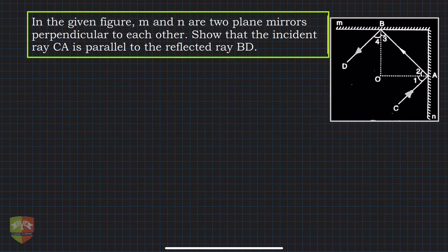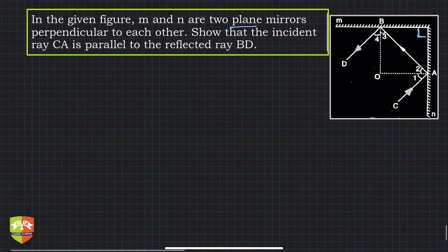Hello friends, welcome to another problem solving session. In this question, it is given that M and N are two plane mirrors perpendicular to each other, so this angle is 90 degrees. We have to show that the incident ray CA is parallel to the reflected ray BD — you can see CA and BD in the figure.